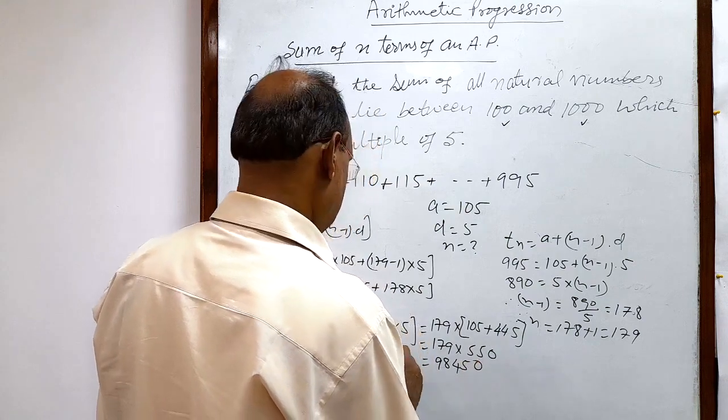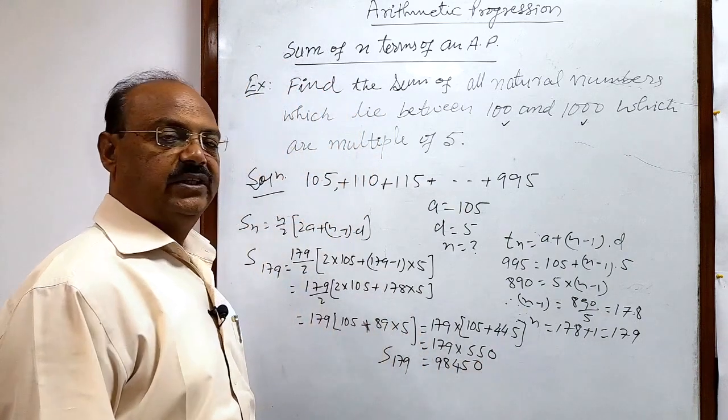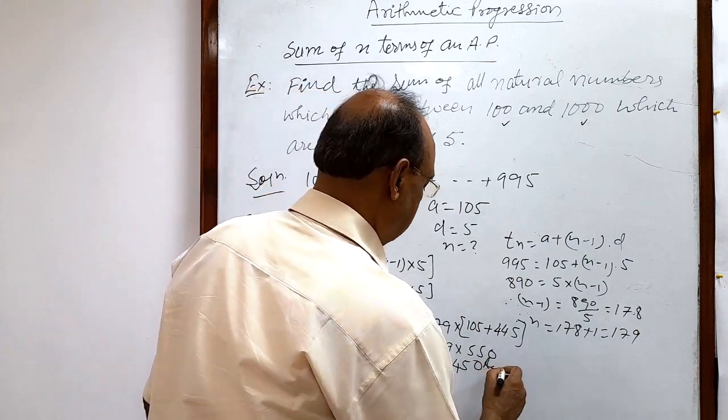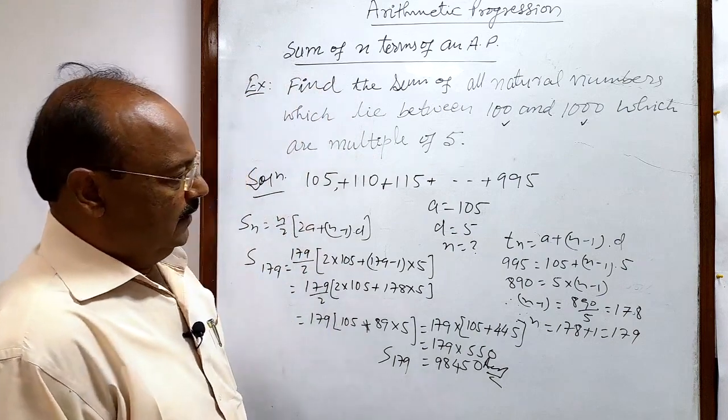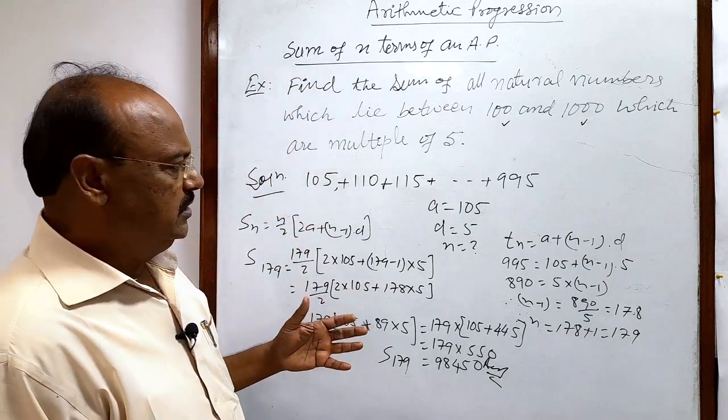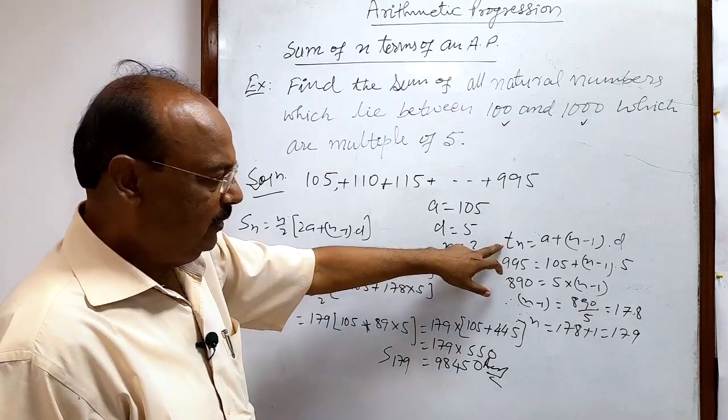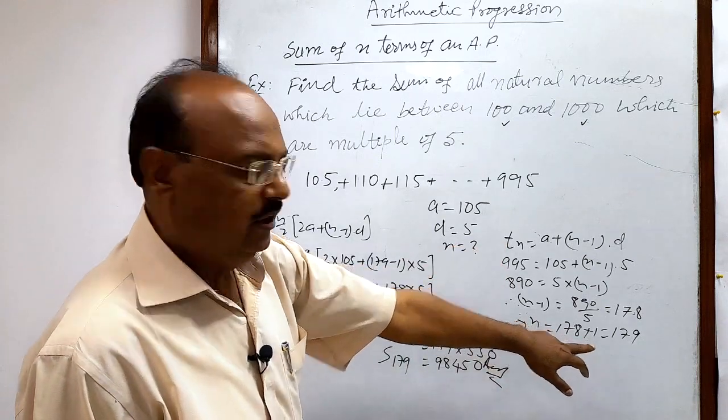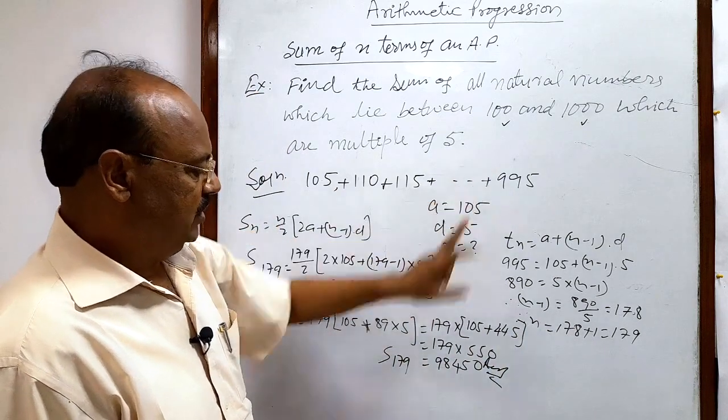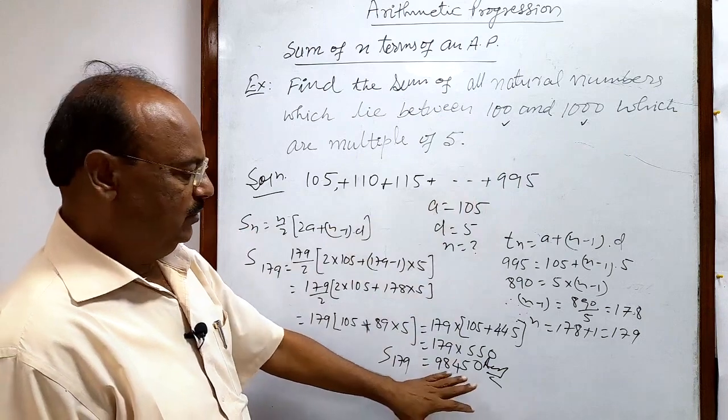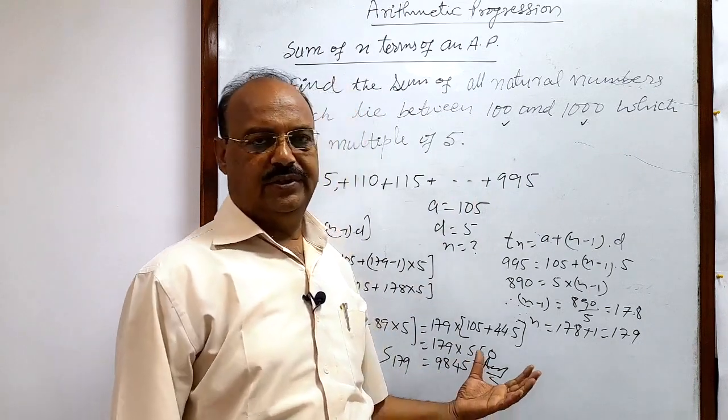So a very small trick is here: first of all we have to find out the value of n using this formula. When we get the value of n, then by using this formula Sn, we can get the sum of these terms very easily. So hope you have understood it very well. Thank you very much for watching this video. Wish you all the best.